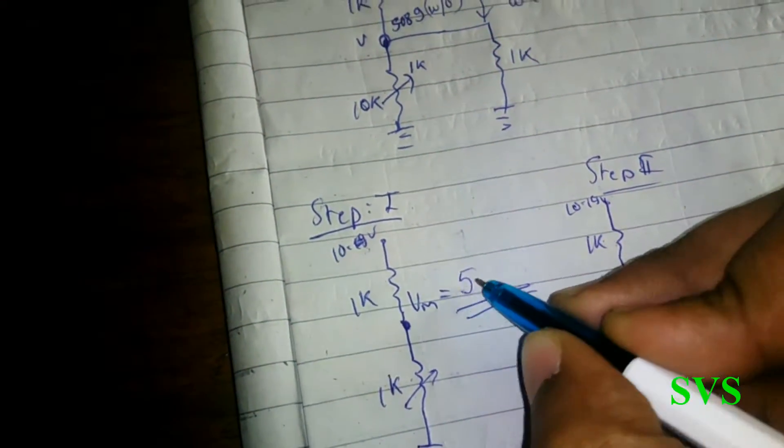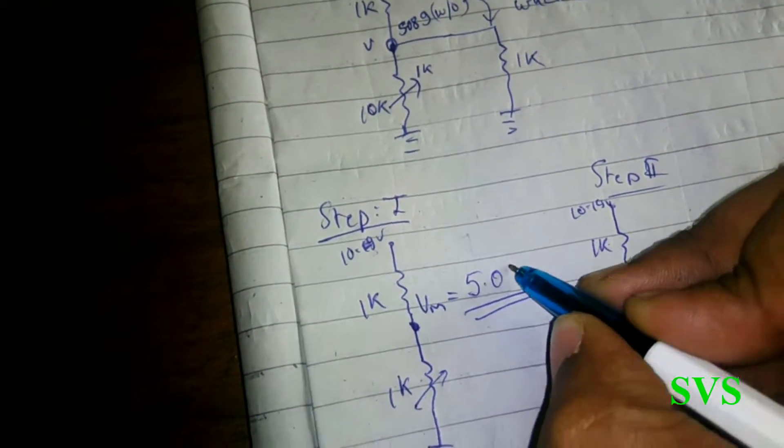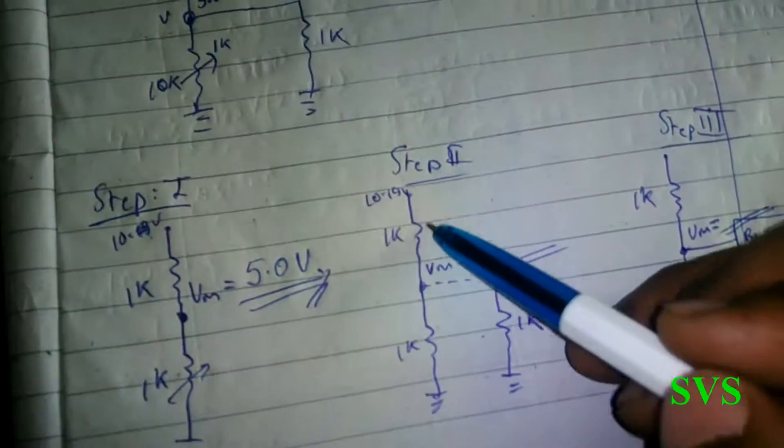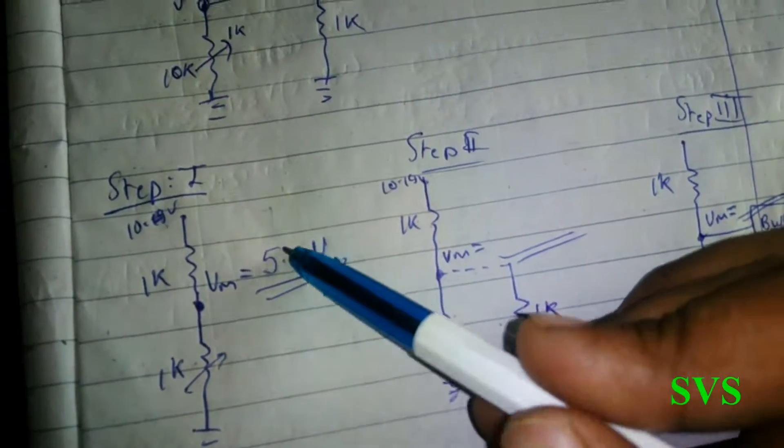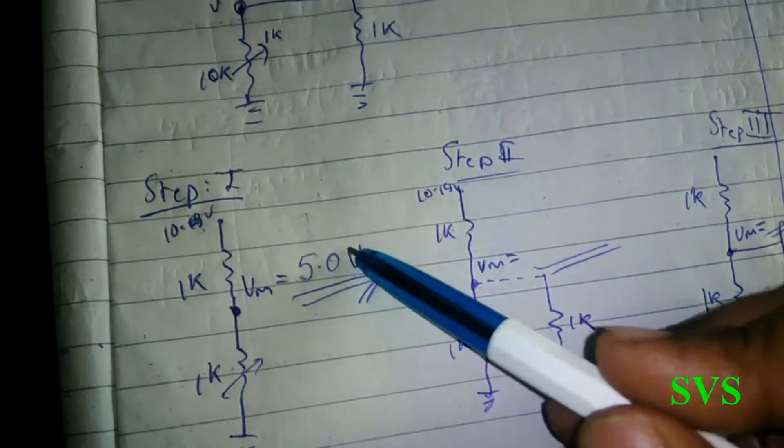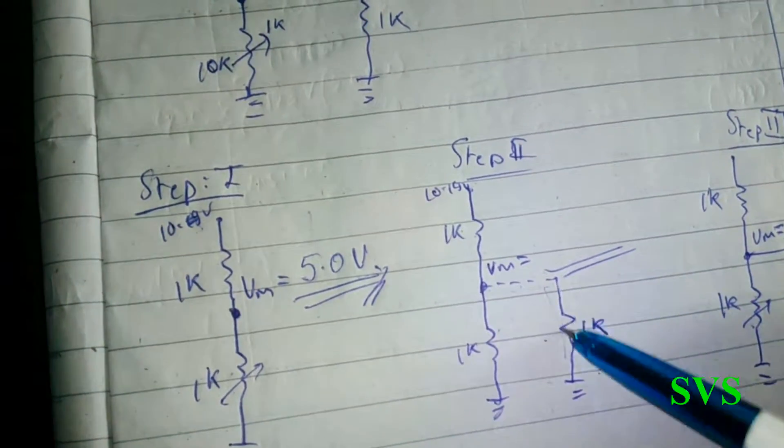Let's come to step 2. We want to drive this load of 1k using 5 volts, so what we'll do is simply load it.